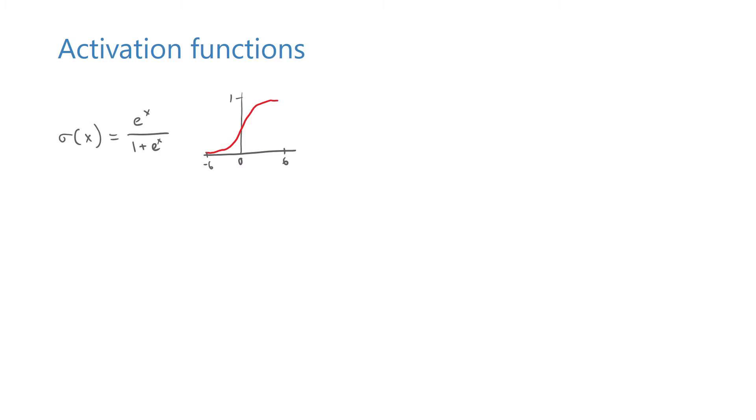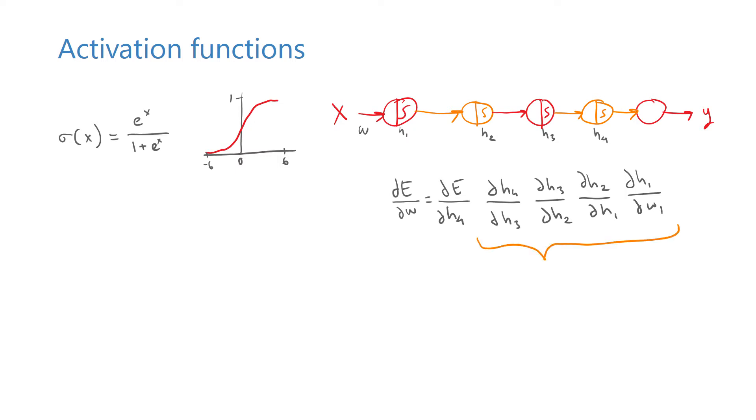First, let's take a look at how the sigmoid function looks like. It looks like an s-curve that saturates at large values of its input. Now let's see what happens to the gradient when we use sigmoid activations. This is how we computed the derivative of the error with respect to the weight using the chain rule. Since these hidden units use sigmoid activations, their derivatives involve the derivative of the sigmoid function which looks like this. As you can see, it quickly saturates to very small numbers when its input moves away from zero.